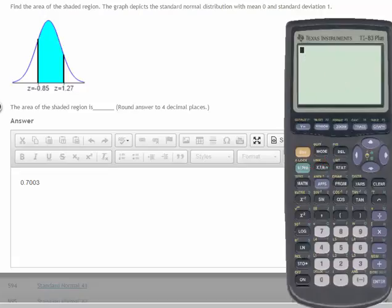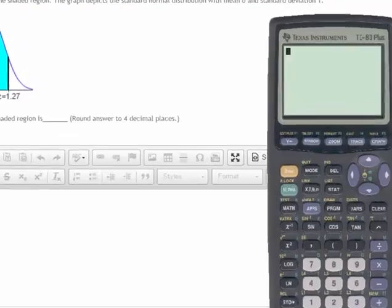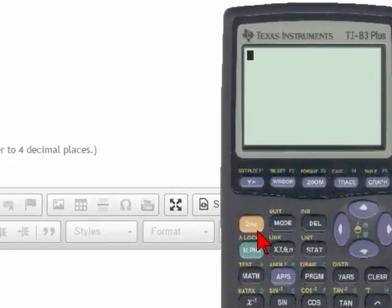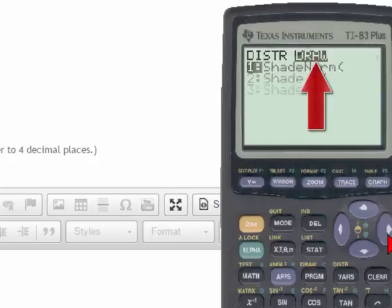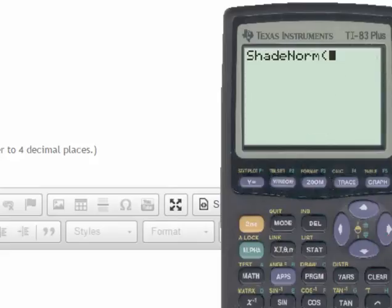and going back to the home screen to graph this distribution and actually get the answer and see it, we'll use the second distribution into the draw menu and select shade normal.